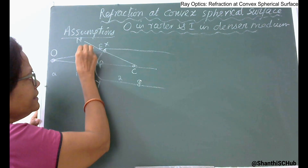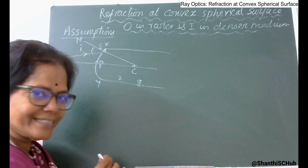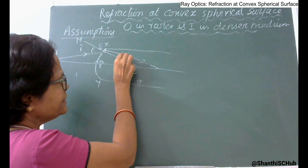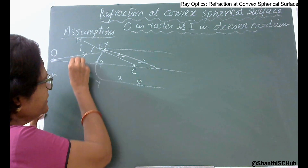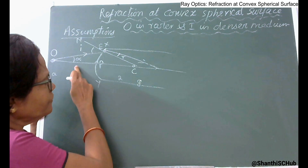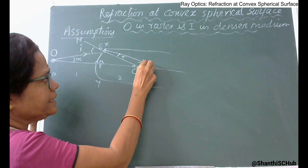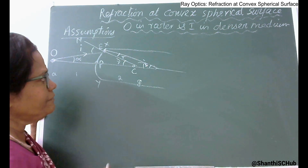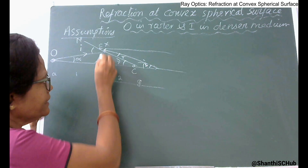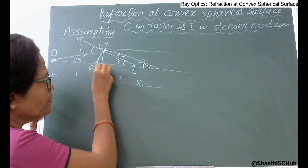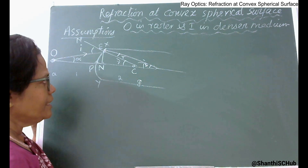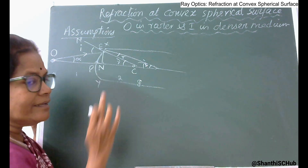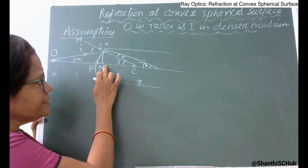The normal at the point of incidence passes through C. The angle between the incident ray and the normal is the angle of incidence, and the ray bends towards the normal — the angle of refraction. The incident ray makes angle alpha with the principal axis, the refracted ray makes angle beta, and the normal at point E makes angle gamma with the principal axis. Then draw a normal line from the point of incidence to the principal axis.